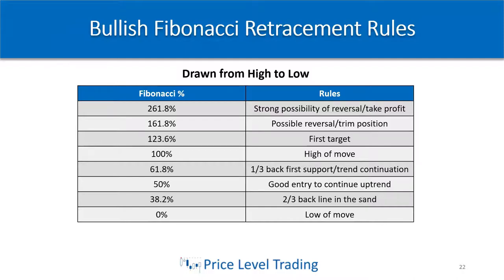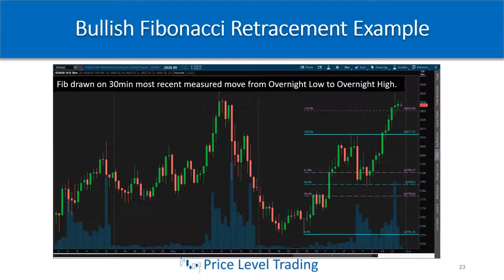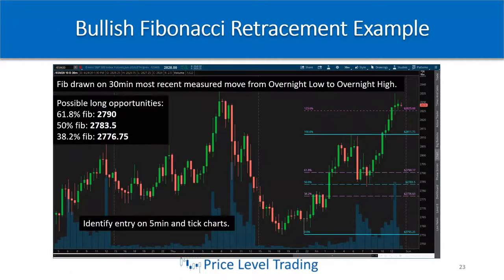So definitely take your profit. Let's take a look at a bullish Fibonacci retracement example on the ES S&P 500 futures on the 30-minute chart. I drew the Fib from the high to the low of the most recent measured move from Thursday night's Globex action into Friday's open. That gave me Fibonacci retracement levels with long opportunities at one-third back at 2790, the 50% halfway back at 2783.50, and the two-thirds line in the sand at 2776.75.